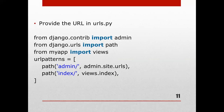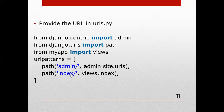We provide the URL in urls.py: from django.contrib import admin, from django.urls import path, from myapp import views. In urlpatterns, we include path('admin/', admin.site.urls) and path('index/', views.index) to map the index view.